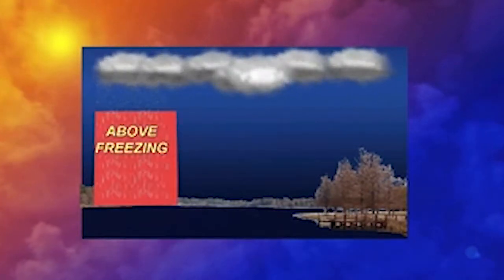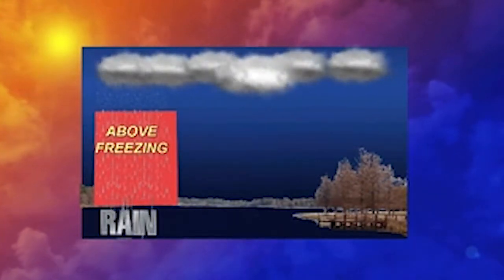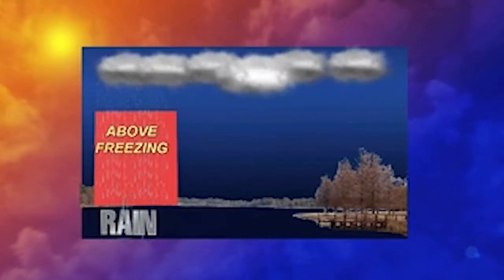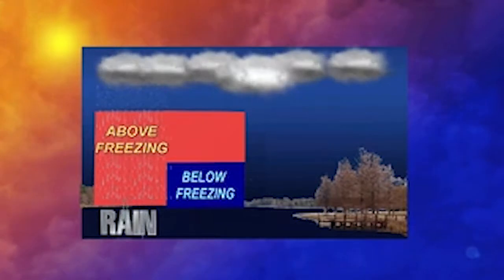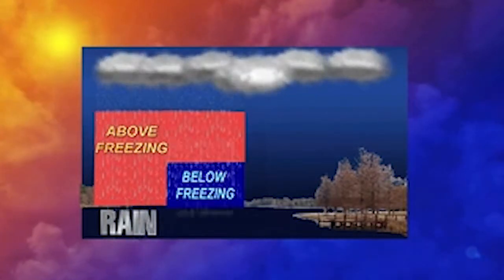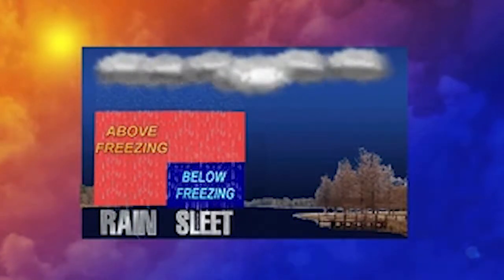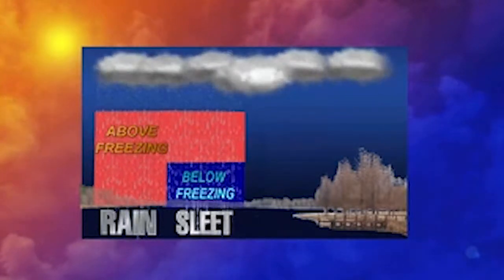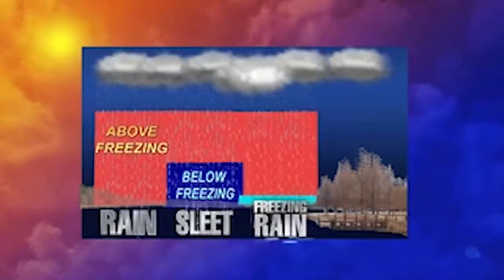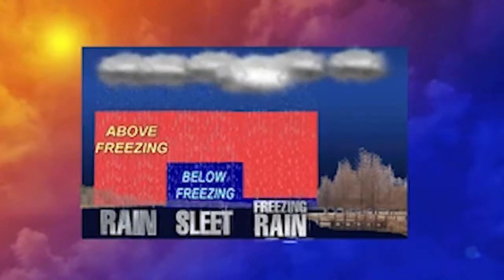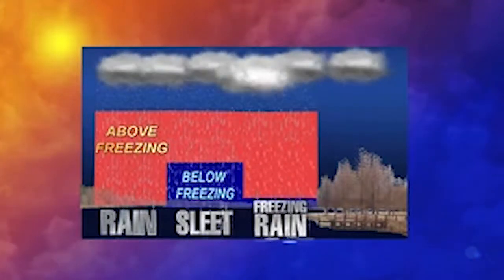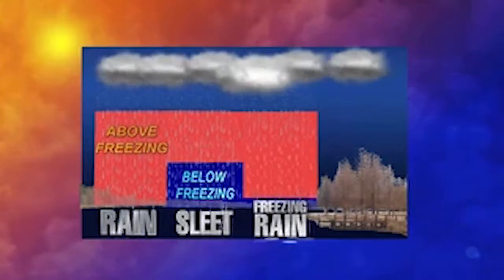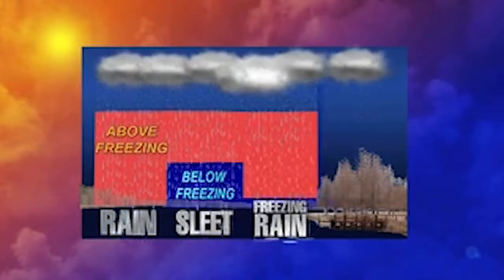If the precipitation starts as snow but runs into any air warmer than 32 degrees, it melts and changes to rain. If rain happens to fall through air colder than 32 degrees, it freezes, turning to sleet, which is just frozen raindrops. Freezing rain happens when the air is warmer than 32 degrees but the ground is below freezing, forcing that rain to freeze on contact, forming a layer of ice.